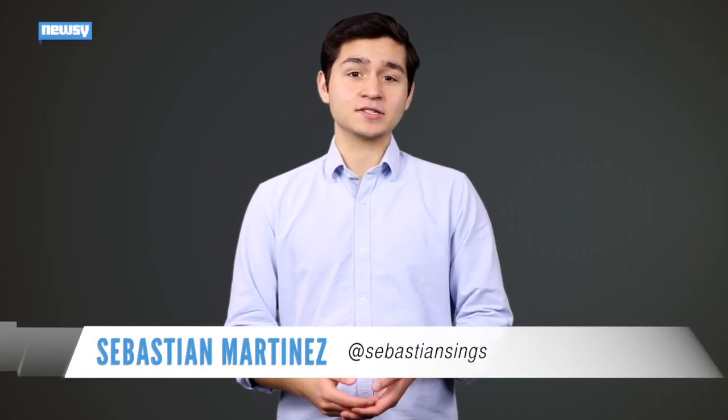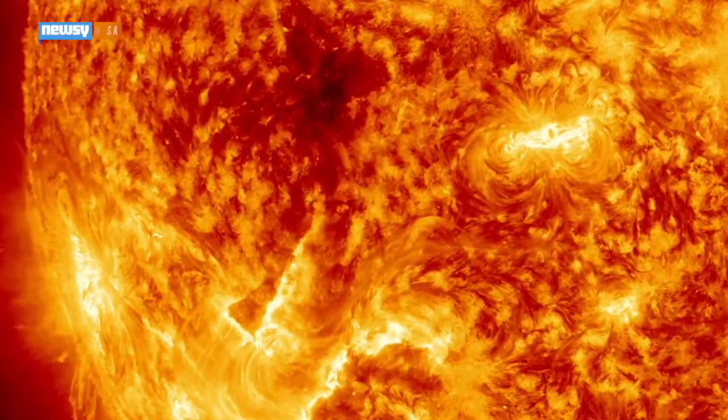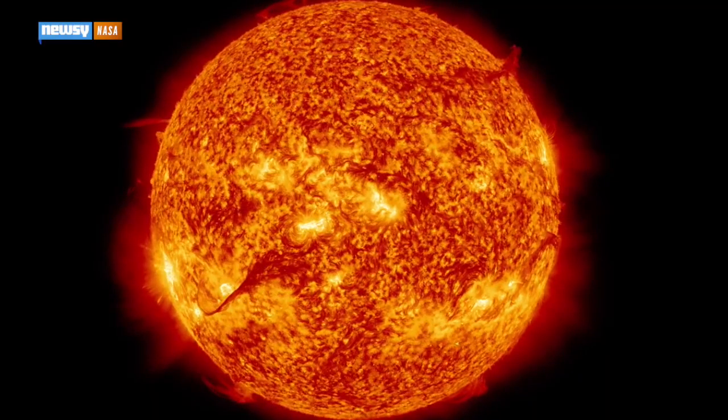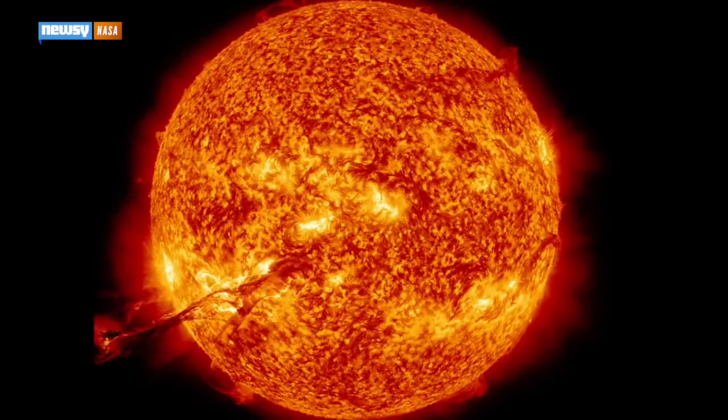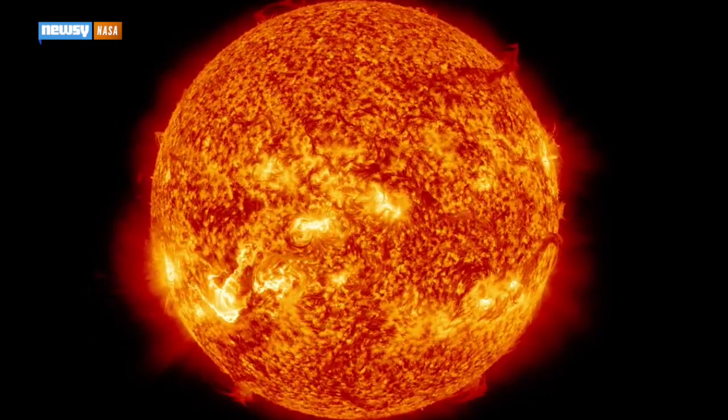we have to do some stretching to understand what something 12 billion times more massive than our sun actually means. The first part of that is understanding our sun is already really, really big, 333,000 times the mass of our cozy little planet and about 1.3 million times the volume.